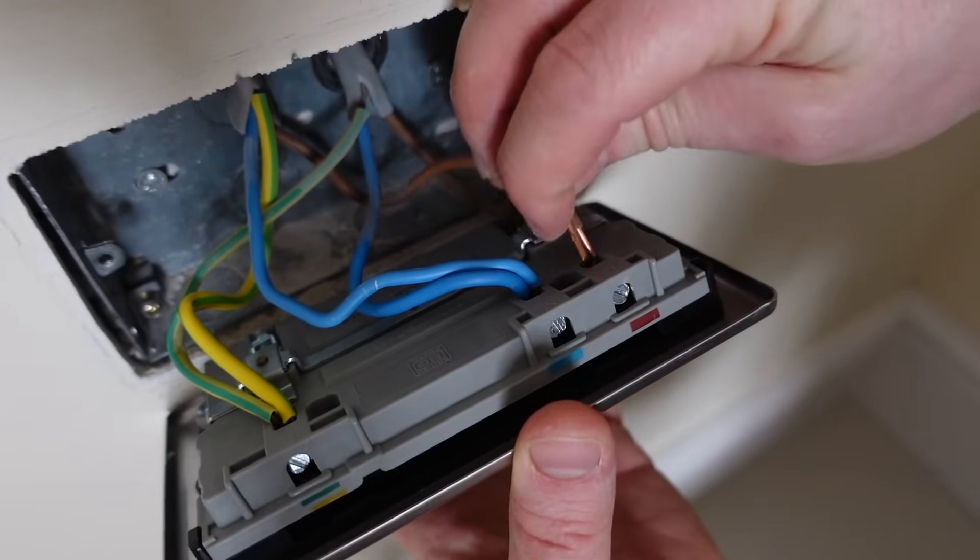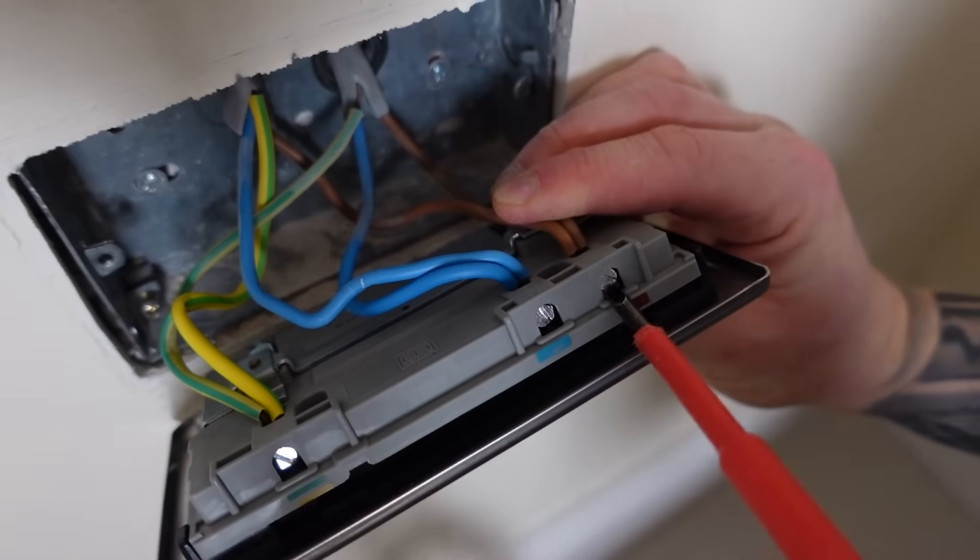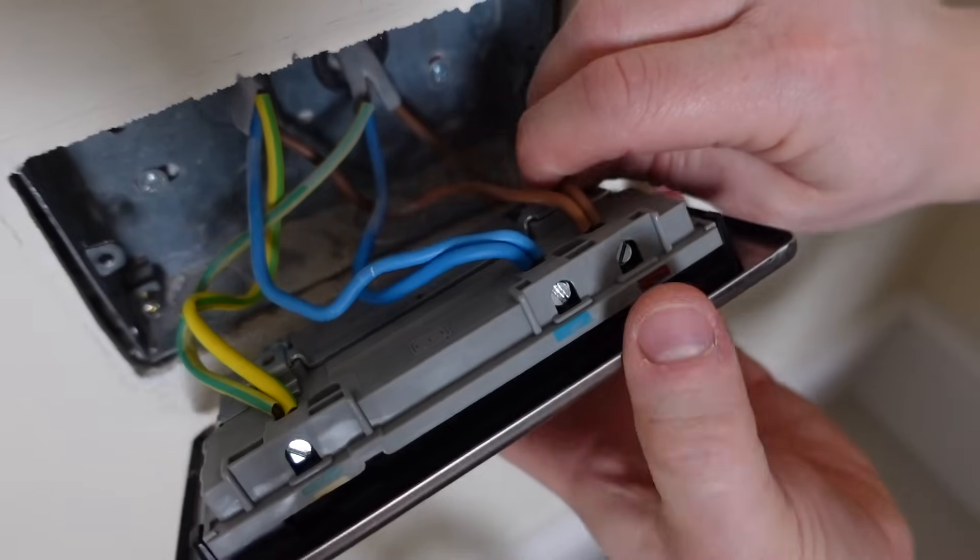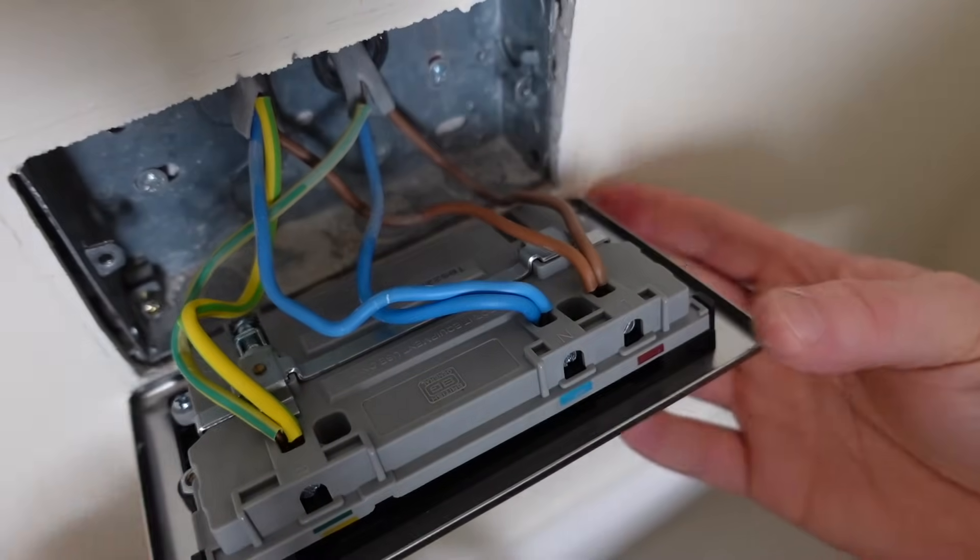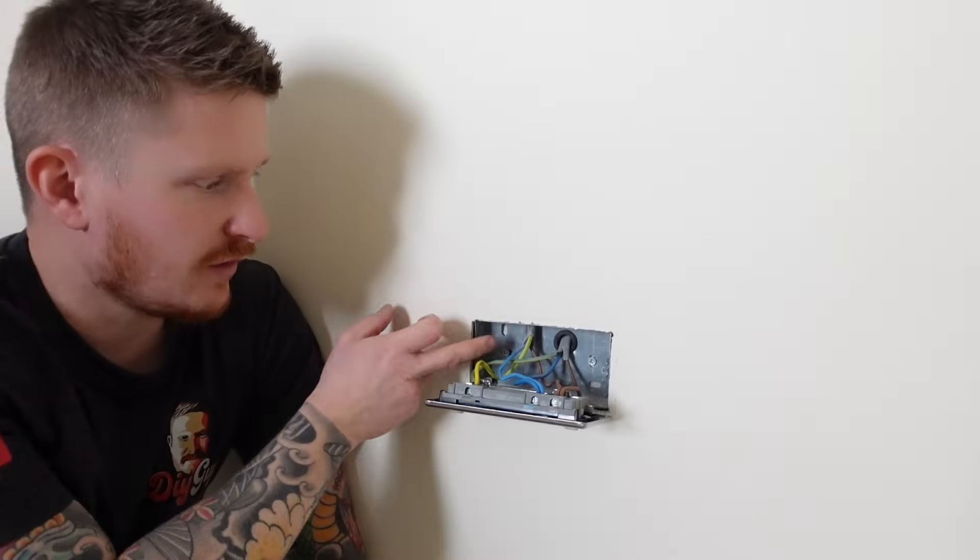And lastly we'll do the same with the brown wires, that's the live ones. Push them in all the way and then do up the terminal screw nice and tight. Just give them a tug just to make sure they're not going to come loose.